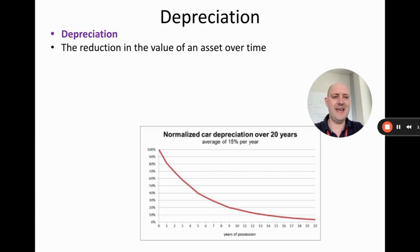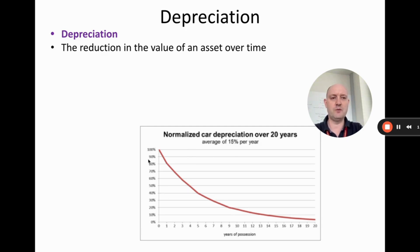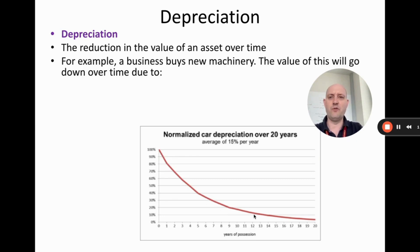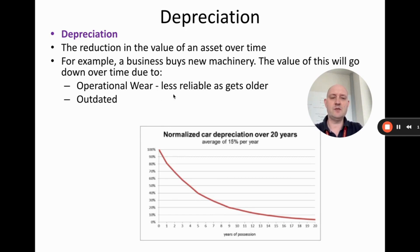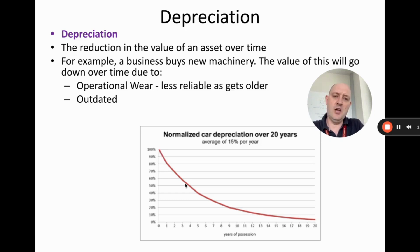Depreciation is when the value of an asset goes down over time. You can see on this graph here we've looked at car depreciation. You've got the value of the car as a percentage of the original price when it was new, over years of possession. When you buy a new car it's worth 100% of its value, and then over time the value goes down. The reasons for this are operational wear — as it gets older the engine gets outdated, it needs more maintenance. It also becomes outdated because new cars come along with new technology. In the earlier years the value goes down more steeply than later years, so you lose more of the car's value in the earlier years.